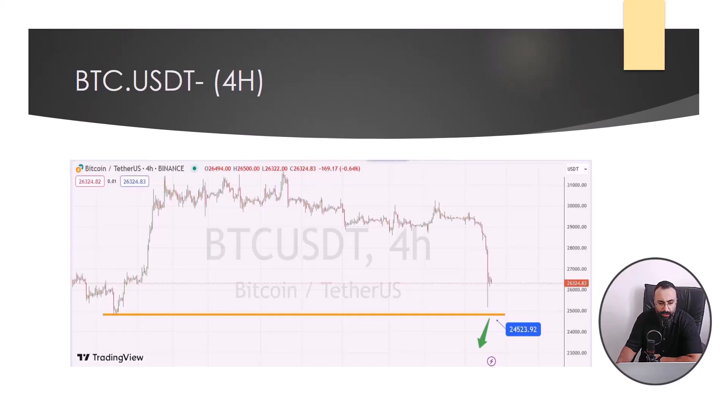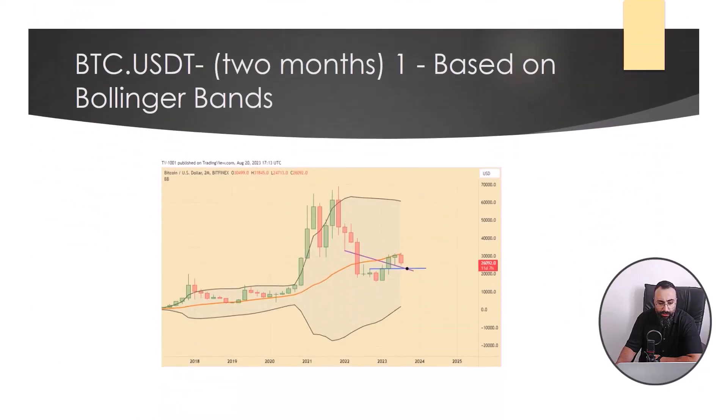Now we have some analysis for monthly timeframe. Let's check them together. In the first analysis based on Bollinger Bands, note that about 10 days later, the monthly candle closes.